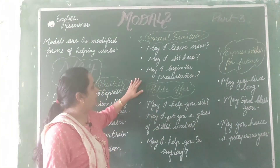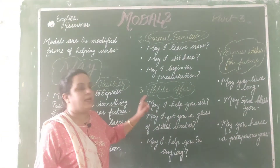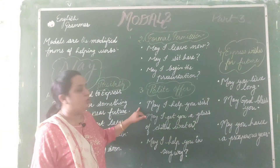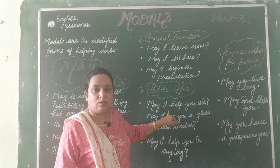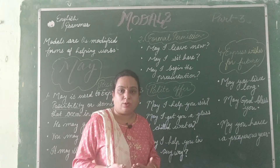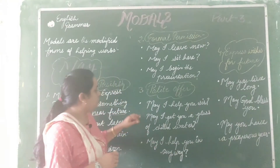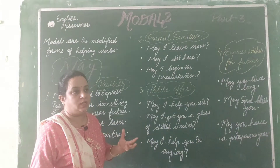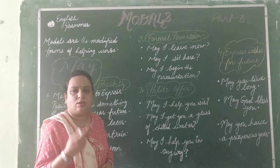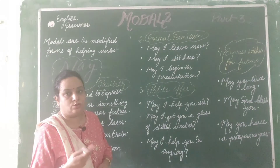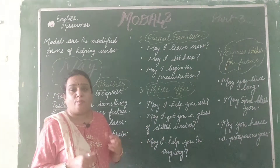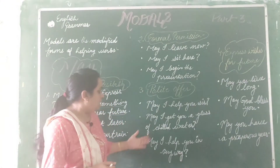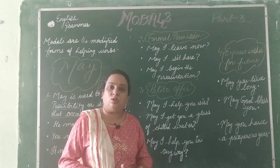The third use of may is for polite offers. If you want to offer someone help in a polite manner, you use may. For example, 'May I help you, sir?' — you are offering yourself very politely. 'May I get you a glass of chilled water?' — if someone is very thirsty, you are offering in a polite way. 'May I help you in any way?' — this is also a polite offer.